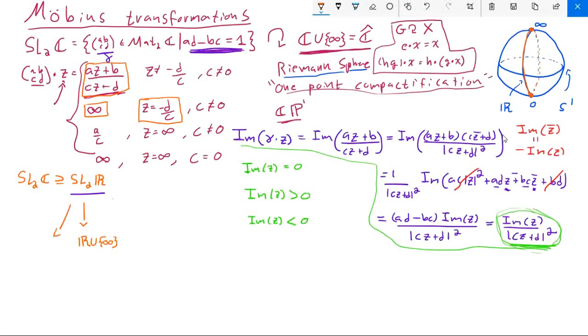So the group SL2R also preserves the space H plus, the space of all the complex numbers whose imaginary part is strictly greater than zero, and the space H minus whose imaginary part is strictly less than zero. So SL2R only takes points from the right hemisphere to points of the right hemisphere. It only takes points of the left hemisphere to points of the left hemisphere. And it only takes points which lie on this longitudinal line of real numbers plus the point at infinity back to itself as well.